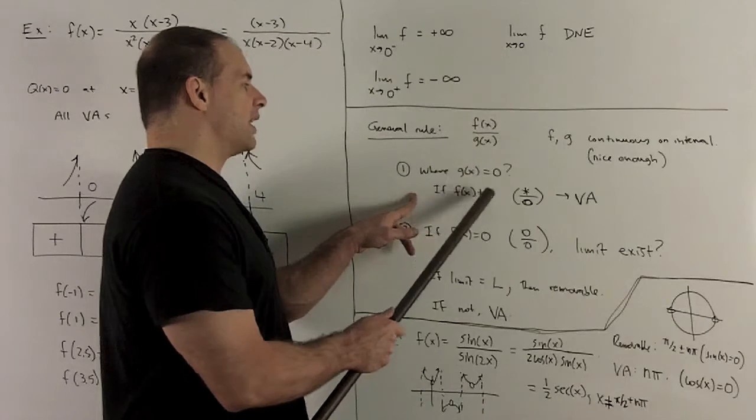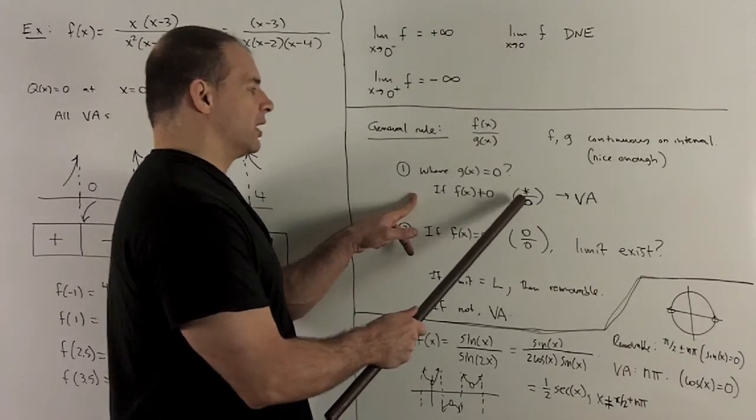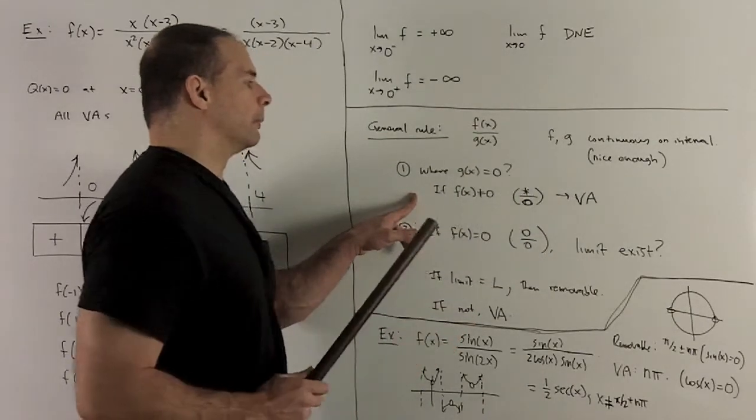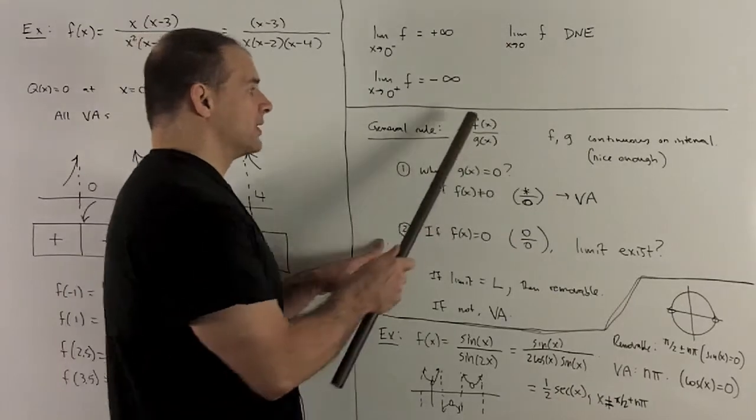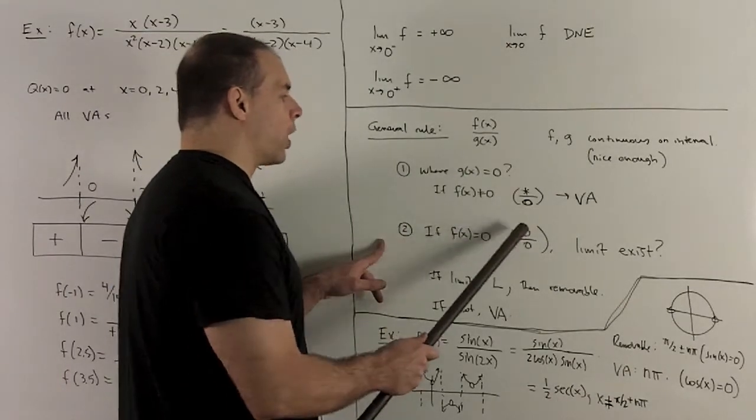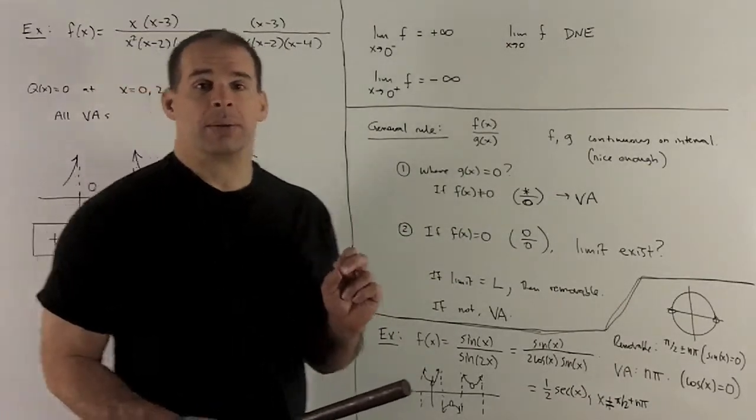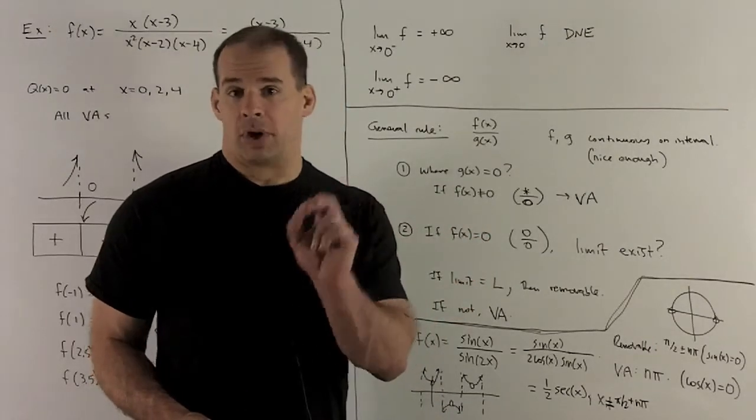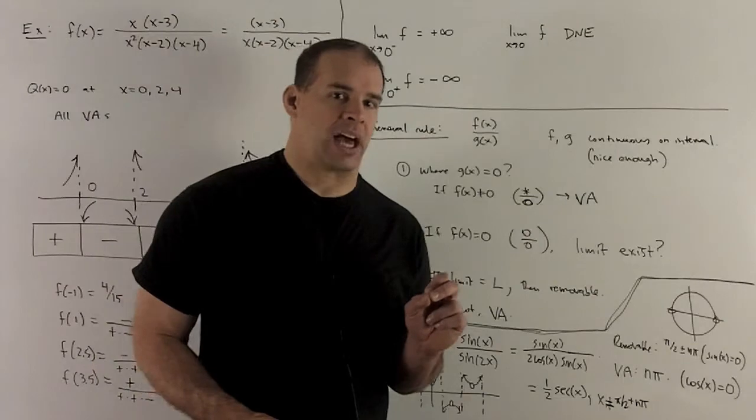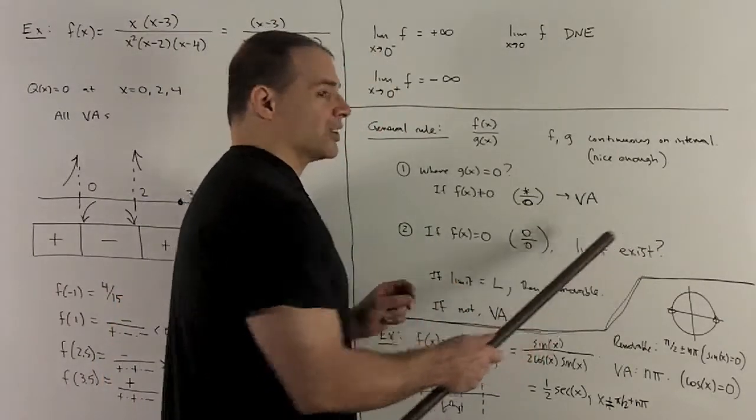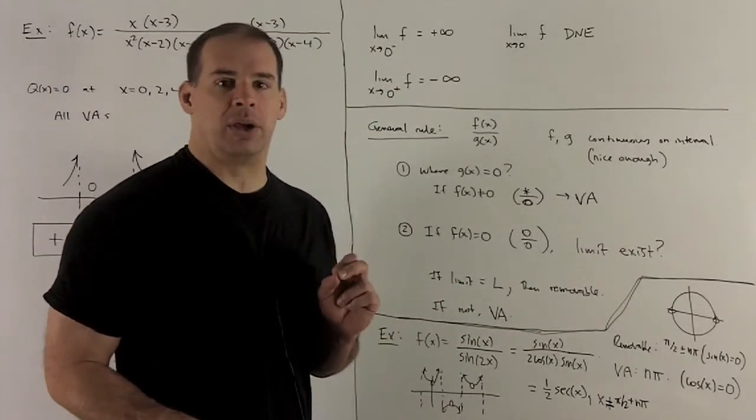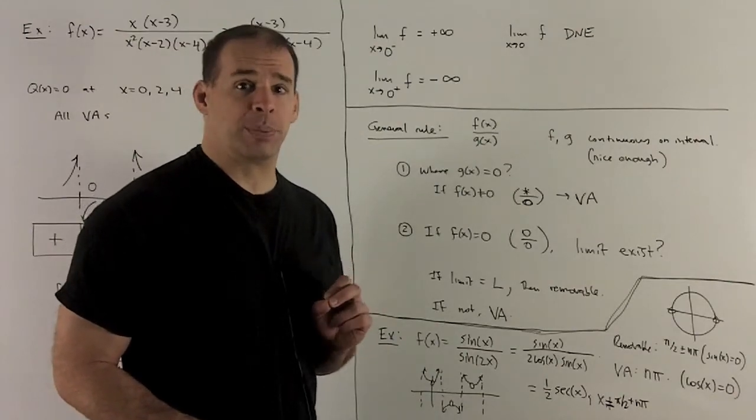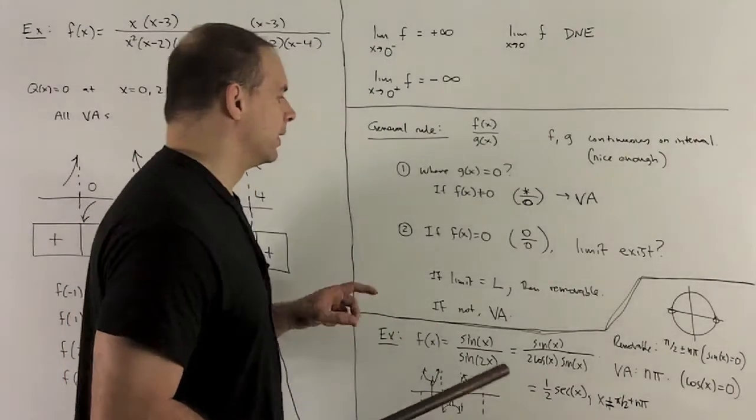If your function on top is not equal to 0 also, then that's going to give you a vertical asymptote. If the thing on top is also equal to 0, then you have to worry, does a limit exist? Because, remember before, we had to worry, do I have vertical asymptotes, or do I have removable discontinuities? So, if a limit exists, that's going to say you have a removable discontinuity. If you wanted to make it continuous, you could plug a point in there.